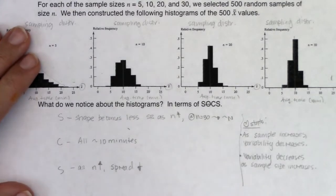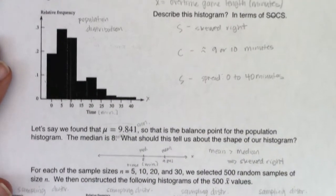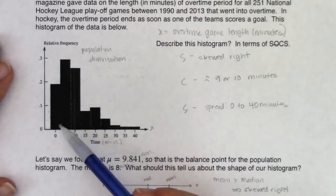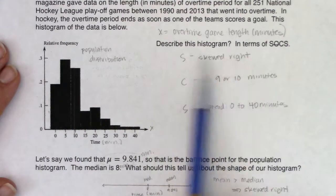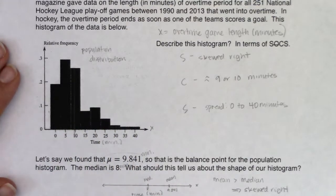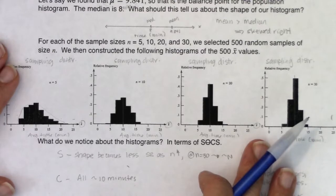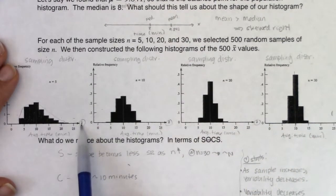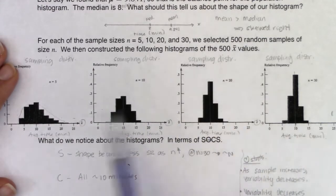Let's draw conclusions and see patterns — especially between examples one and two. For example two: our population distribution was very skewed right, the center was at 10, and the spread was 0 to 40. As we moved to sampling distributions, all of them had x-bars along the x-axis — these were all averages. The shape was skewed right, but the skewing became less and less severe as sample size increased, and we could barely see the right skew at all at larger sample sizes.